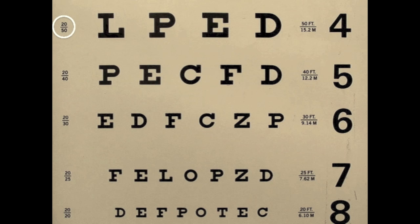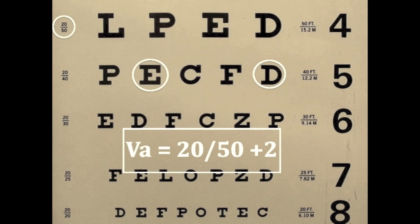If a patient can only partially read a line, you can denote this in your measurement with a suffix. Indicate the number of additional letters the patient is able to read in the next smaller line with a plus. For instance, a visual acuity of 20/50 plus 2 indicates that the patient is able to read all of the 20/50 line and two letters of the next smaller line.